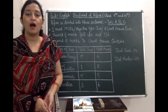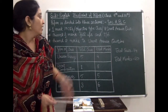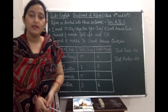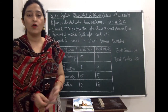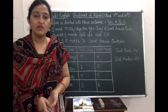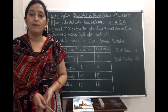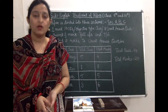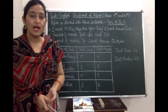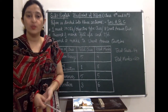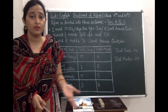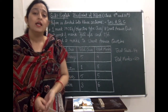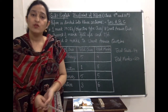Section B is writing and grammar. First, you will get writing portion questions — it can be story writing, letter writing, an article, or a diary entry. As per your syllabus, you will get one or two questions from the writing portion and you have to answer them.